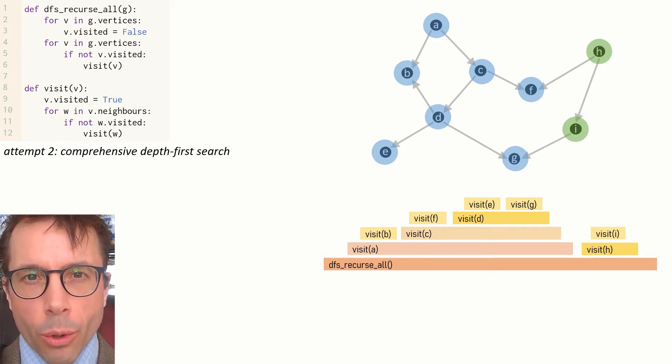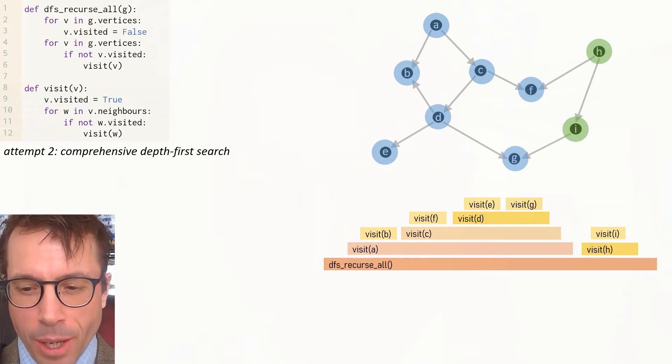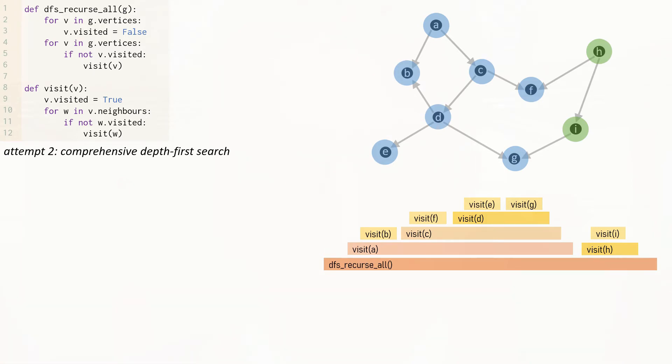So this visualization shows us the entire program execution. It shows us when each function call started and ended and where it was called. This is called a flame chart, and if you squint you can just about make out flickering flames in this diagram.